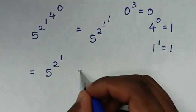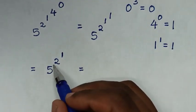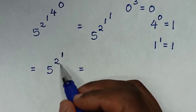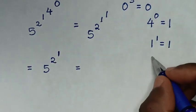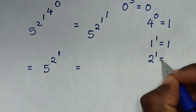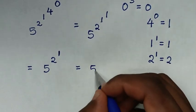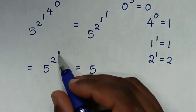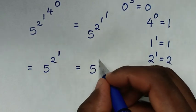In the next step, we will work with these two top powers of 2 power of 1. 2 power of 1 is equal to 2. So it will be 5 power of 2, and we substitute here 2.